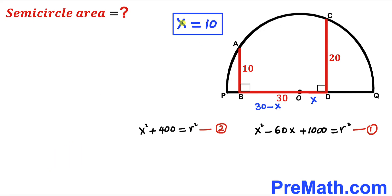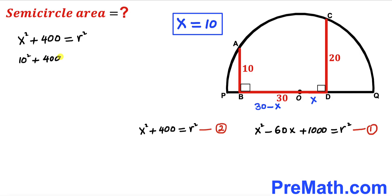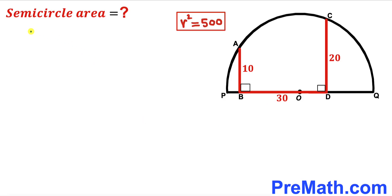Now substituting x = 10 into Equation 2: 10² + 400 = r², which gives 100 + 400 = r², so r² = 500.